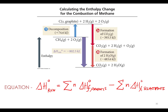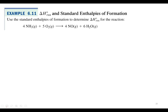The Greek letter sigma just means sum — we're going to add them all up. We multiply the heat of formation enthalpy changes by the coefficients in the balanced chemical equation for whatever we are calculating, and that applies to both the products and the reactants. So let's try this for an example. Example 6.11 is going to have us determine the enthalpy change for this reaction.